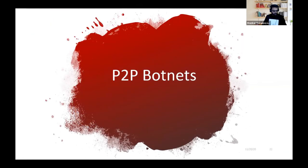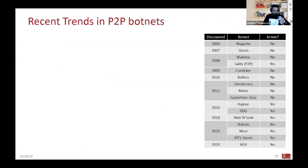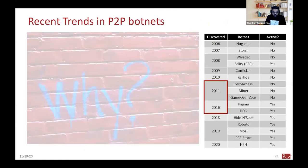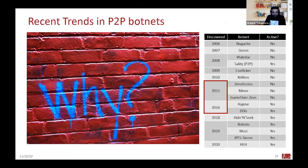Moving to peer-to-peer botnets in more detail — let's look at recent trends. The table here shows a chronological appearance of botnets, their names, and whether they are still active. It started in 2006 and is ongoing in 2020. Between 2011 and 2016, there is a big gap.